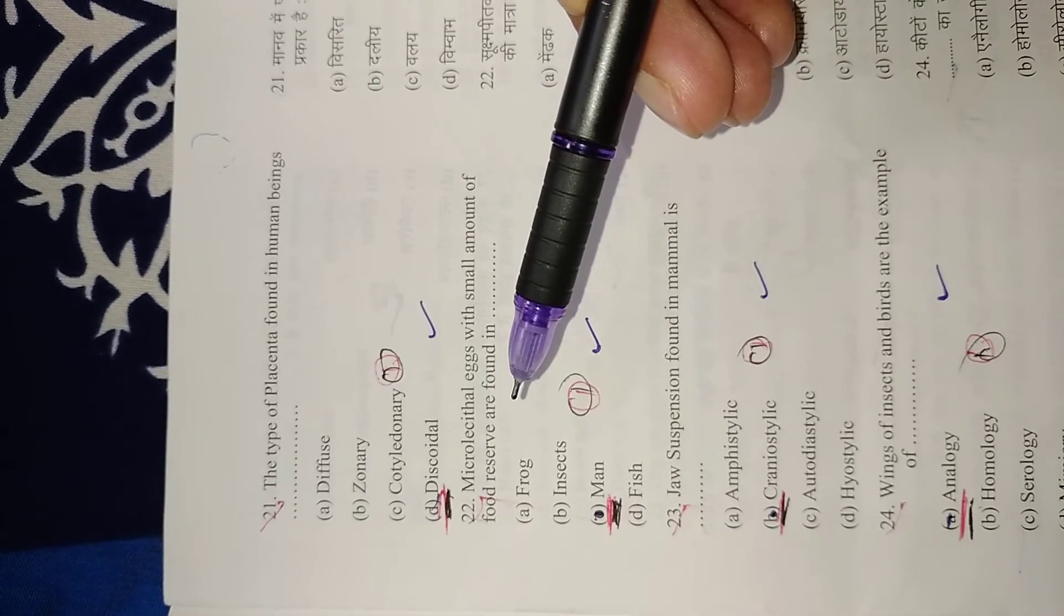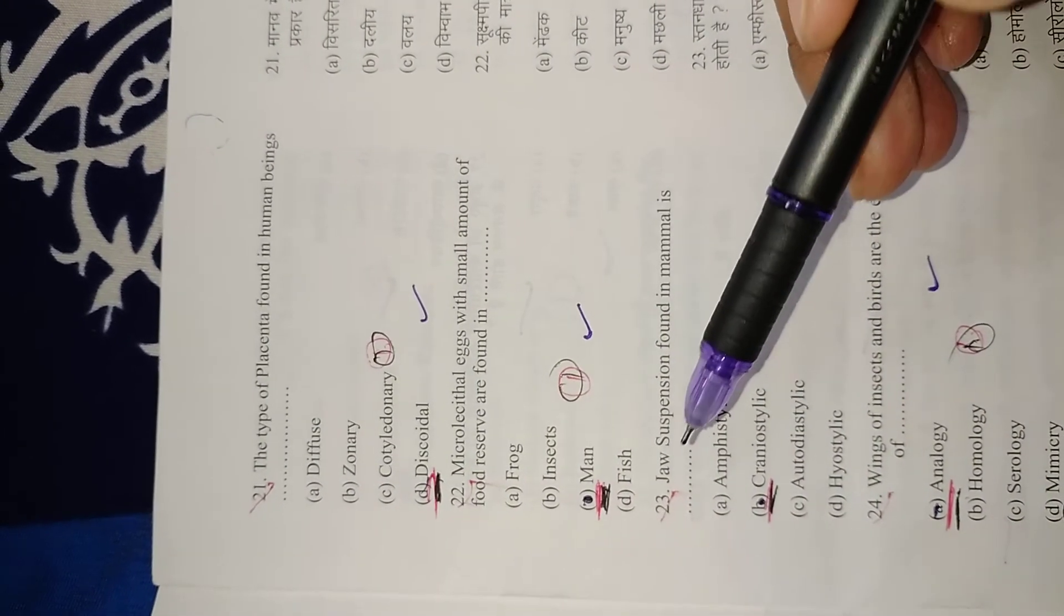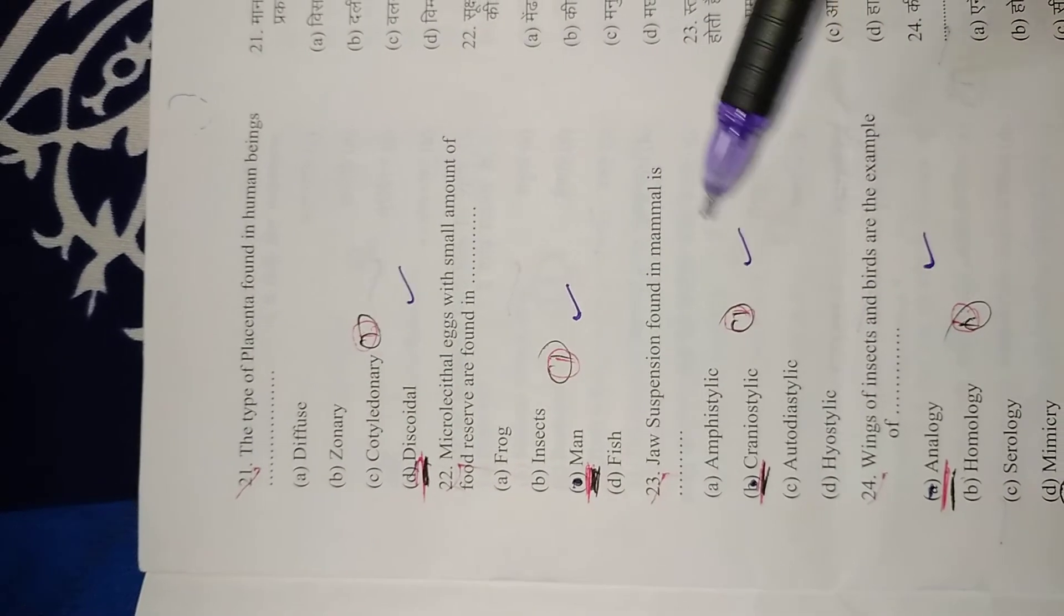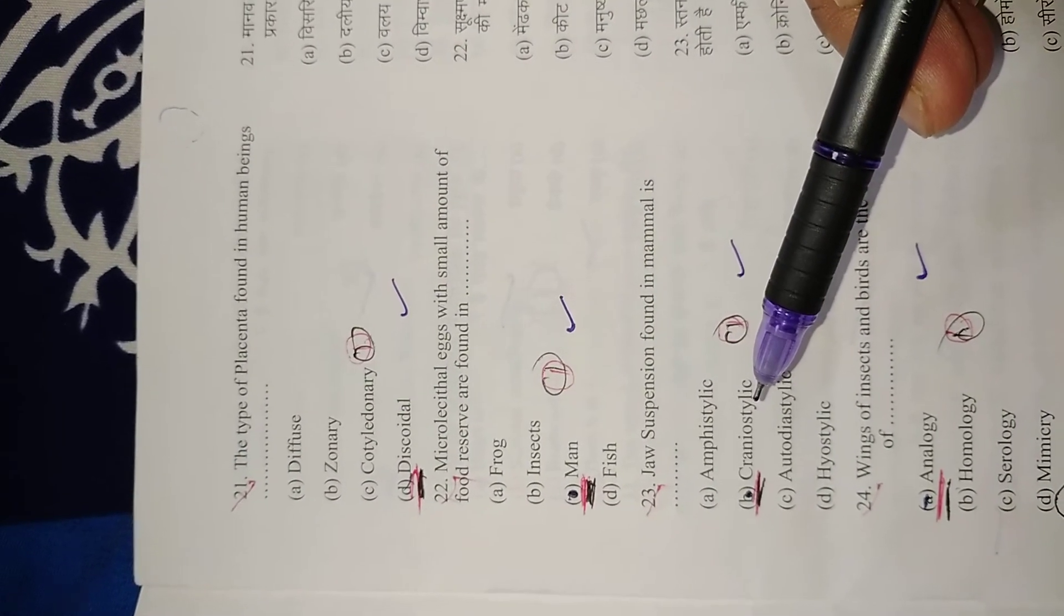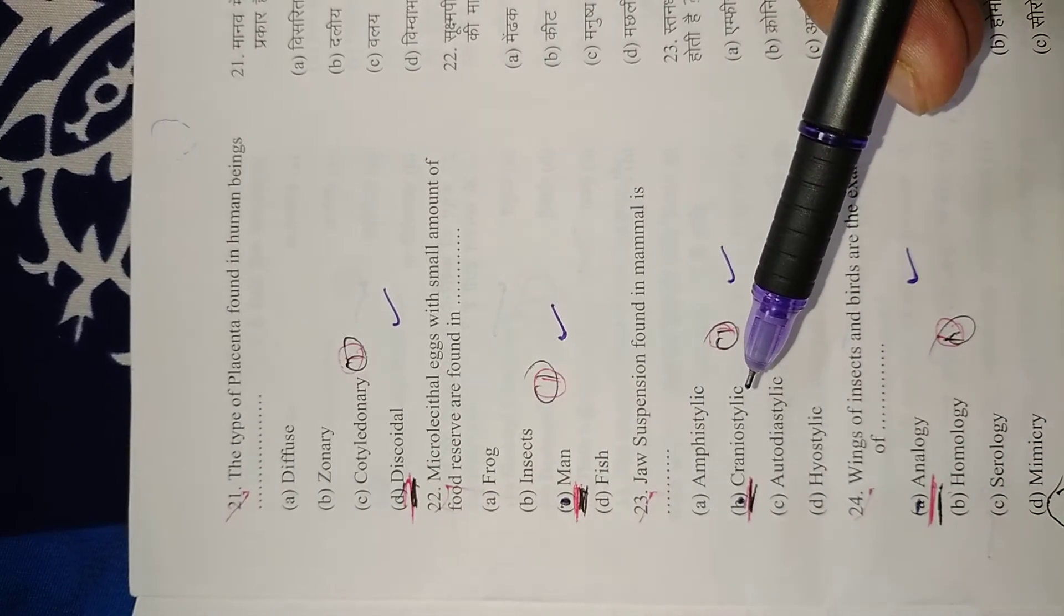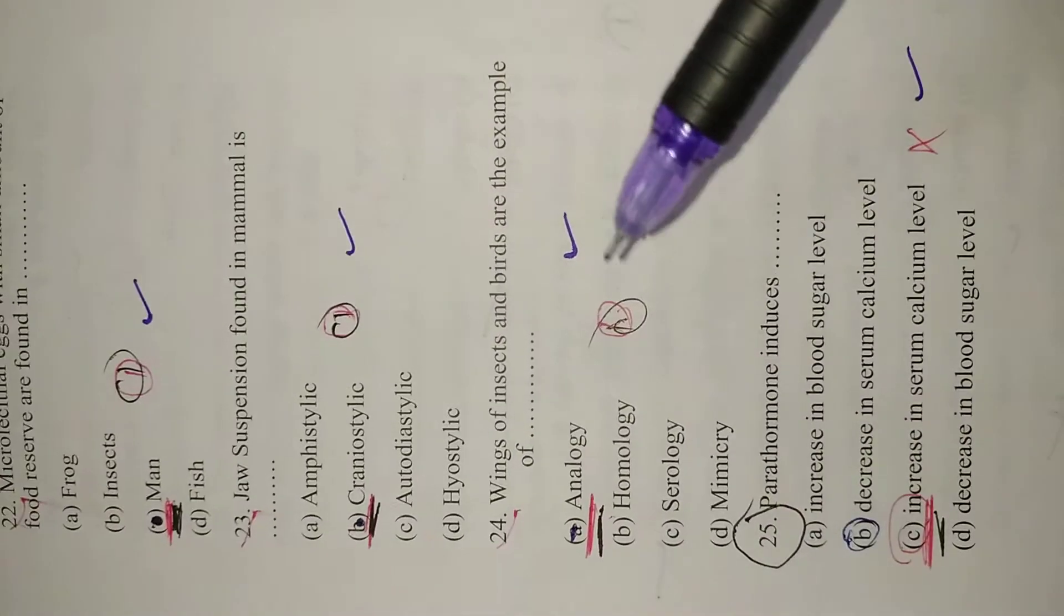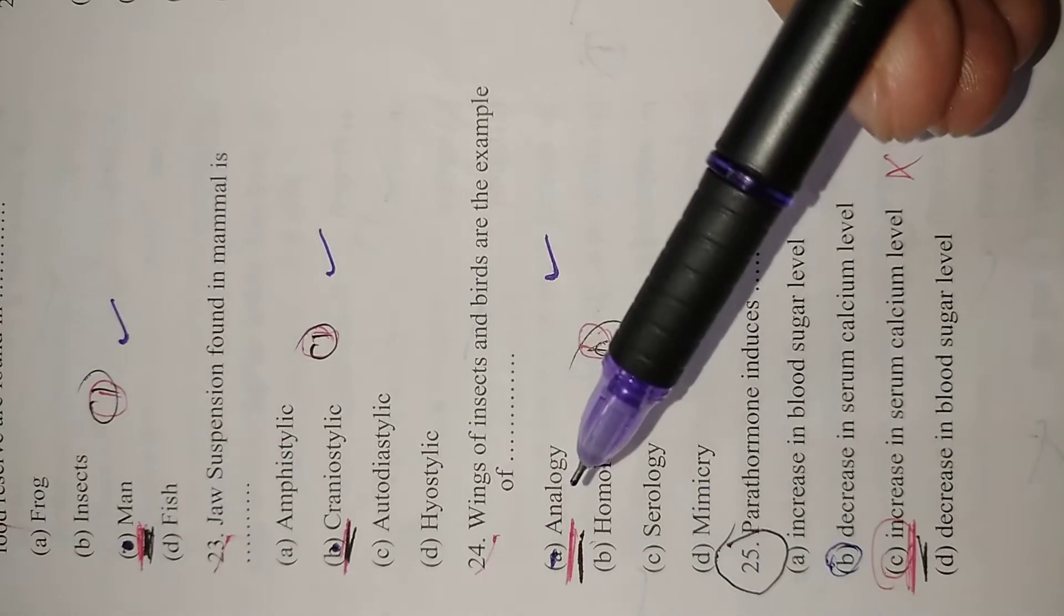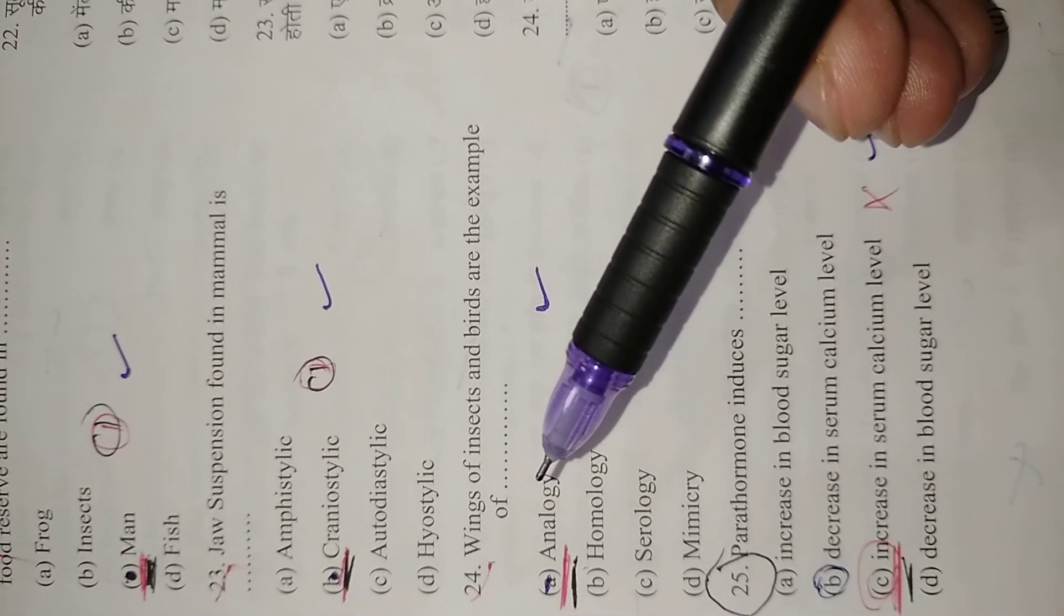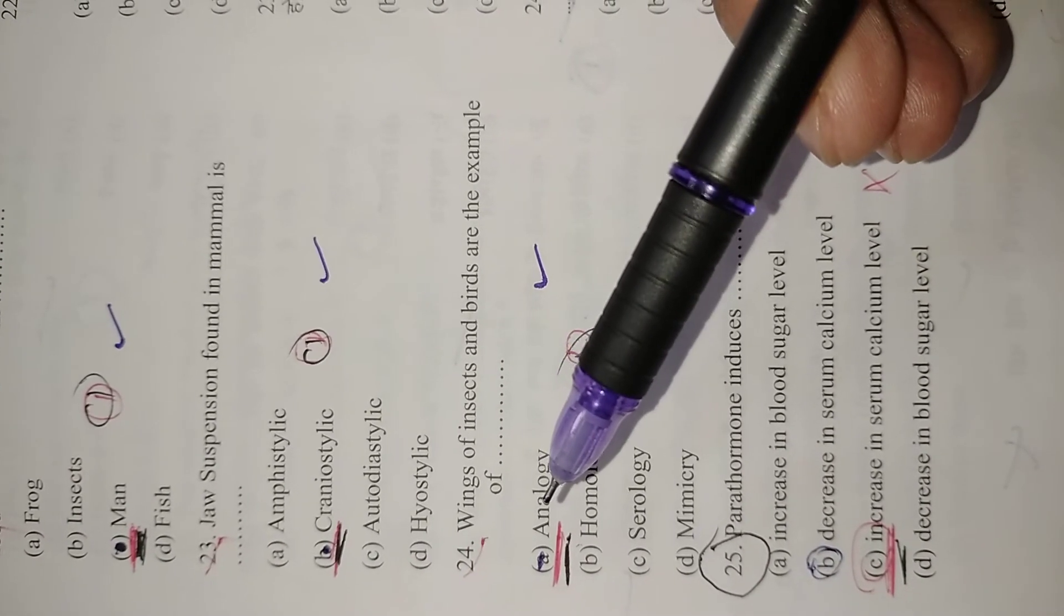Question 23: Jaw suspension found in mammals is cranial stylic, as it is fused with the cranium. Right option is B. Question 24: Wings of insects and birds are examples of analogy. They have similar function but different basic plan. Right option is A.